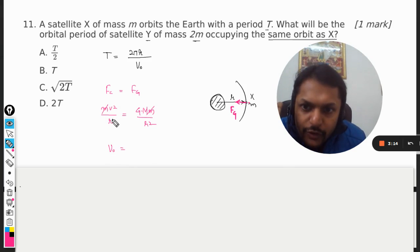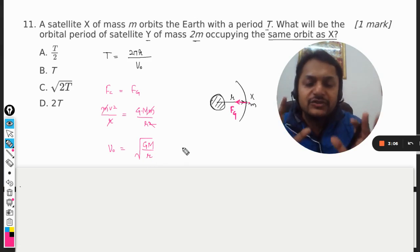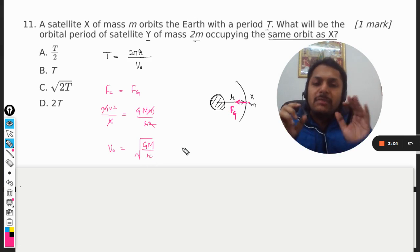So overall for the orbital velocity we have this expression and we can see that it is independent of the mass of satellite. It depends only on the mass of planet and only on the radius of the orbit.